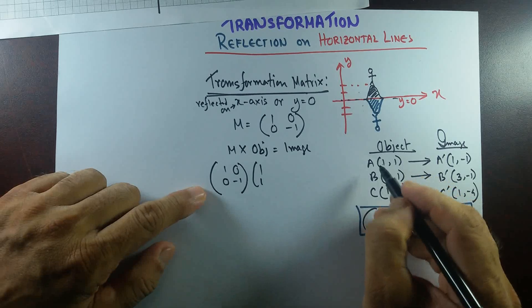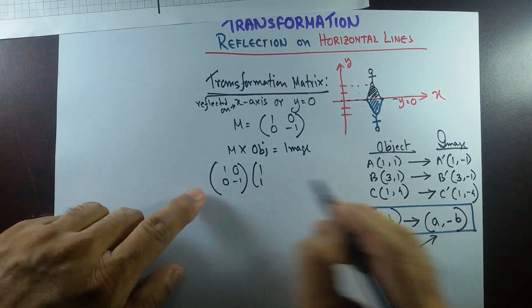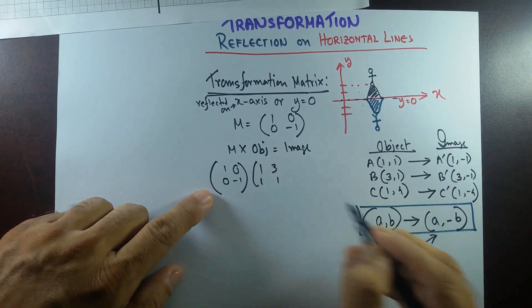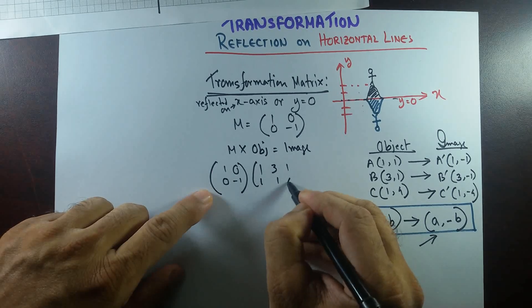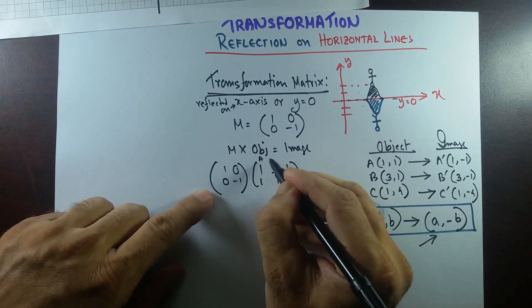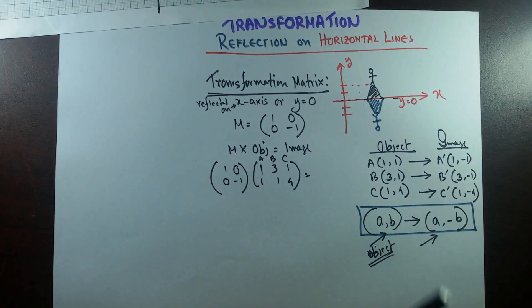The object matrix has coordinates: A is (1, 1), B is (3, 1), and C is (1, 4). Those are the coordinates of A, B, and C arranged as columns.